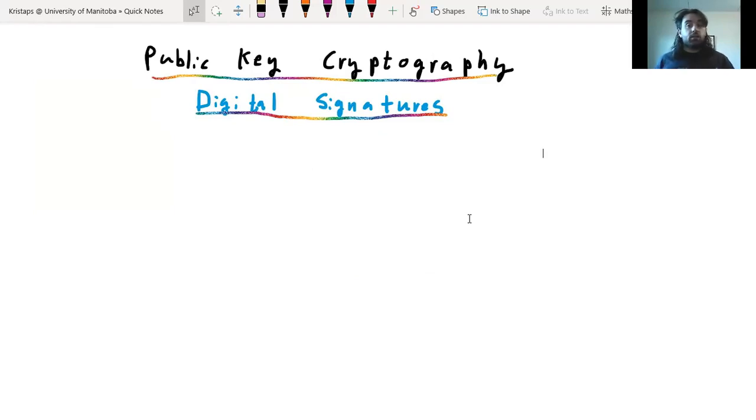The basic idea here is that we want to send a message or receive a message, and we want to be sure that it's coming from the person we think it is. So how do we do that? How do we verify this without secretly exchanging passwords or something?